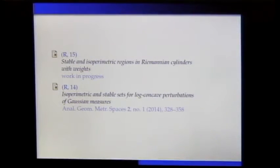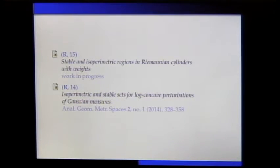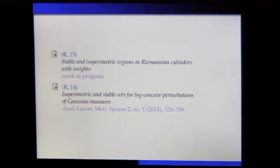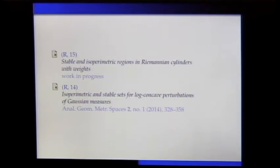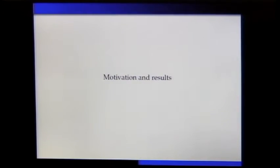In my talk today I will explain some of the results obtained in this work in progress where I studied stable and isoperimetric regions in weighted Riemannian manifolds — Riemannian cylinders more precisely — satisfying certain curvature conditions. The techniques in this work are mostly inspired by a previous paper where we analyzed similar questions for log-concave perturbations of the Gaussian density in Euclidean space. Let me start by introducing the notation and recalling some motivating results.